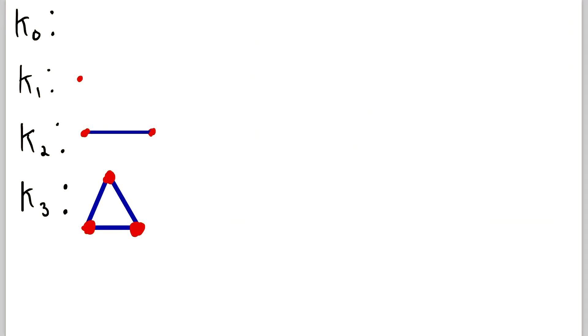With that out of the way, let's look at a few more examples. So here we see the complete graph on zero vertices we just went over, the complete graph on one vertex, the complete graph on two vertices, and of course, the complete graph on three vertices. And again, all of these graphs are complete graphs because every pair of distinct vertices in the graphs is joined by an edge, and there isn't a pair of distinct vertices not joined by an edge.